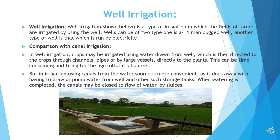Comparison with canal irrigation. In well irrigation, crops may be irrigated using water drawn from wells, which is then directed to the crops through channels, pipes, or by large vessels directly to the plants. This can be time-consuming and tiring for the agricultural laborers. But in canal irrigation, using canals from the water source is more convenient as it does away with having to draw or pump water from wells and other such storage tanks.